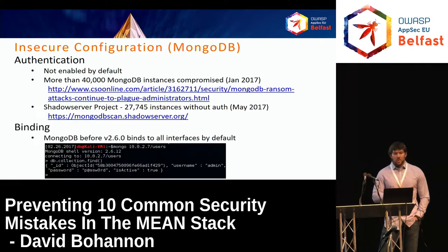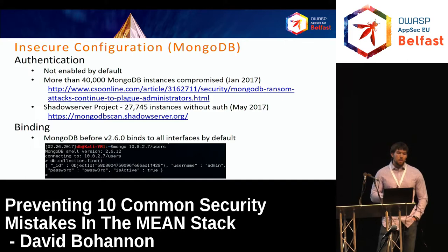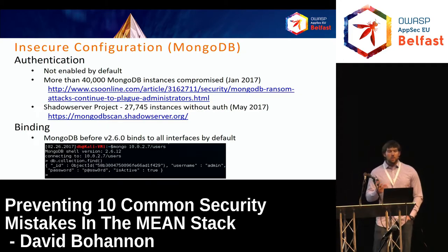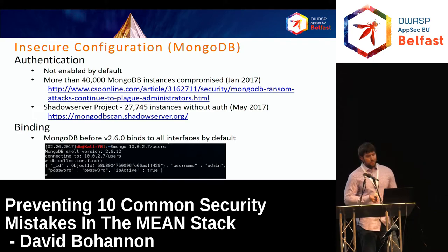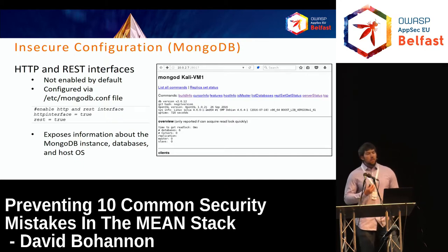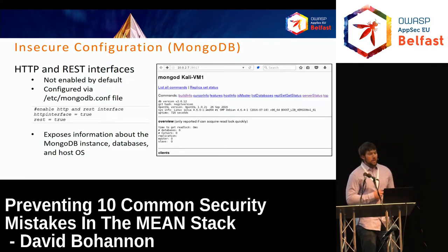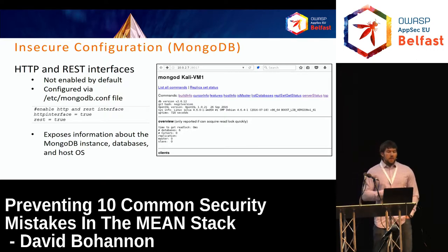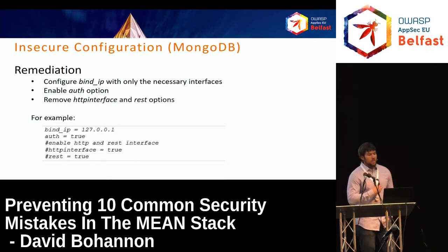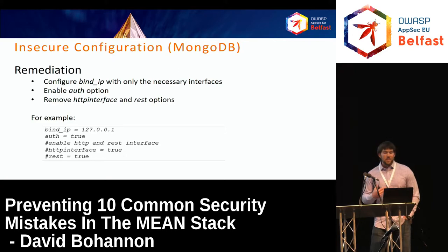It gets worse: if you're using an older version of MongoDB, not only is authentication disabled by default, you're also binding to all interfaces by default — so an out-of-the-box database server is publicly exposed with no authentication the moment you stand it up. Additionally, MongoDB provides the option to enable an HTTP and REST interface. These aren't enabled by default, but if enabled they present information leakage issues. The fixes: configure a bind IP to bind only to necessary interfaces, turn on authentication, and turn off the HTTP and REST interface options.